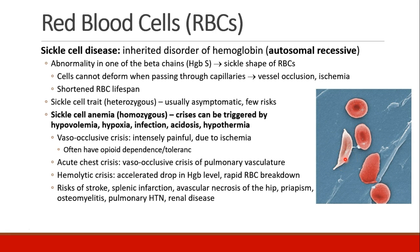Many of these patients have had so many crises that they've become opioid-dependent or tolerant. The acute chest crisis is a vaso-occlusive crisis of the pulmonary vasculature. A hemolytic crisis occurs when there is a sudden accelerated drop in hemoglobin level due to rapid breakdown of red blood cells. These patients are at increased risk for stroke, infarction of the spleen, avascular necrosis of the hip, priapism, osteomyelitis, pulmonary hypertension, and renal disease.